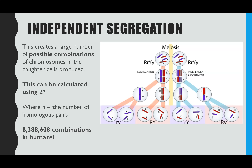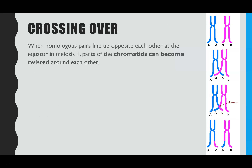The second mechanism introducing variation is crossing over, which also happens in meiosis one when homologous pairs line up at the equator. The homologous pairs have the same genes — shown by the same letters — but different alleles. The paternal chromosome carries the dominant allele and the maternal carries the recessive. Sometimes when these pairs line up, their chromatids get tangled and twisted around each other.